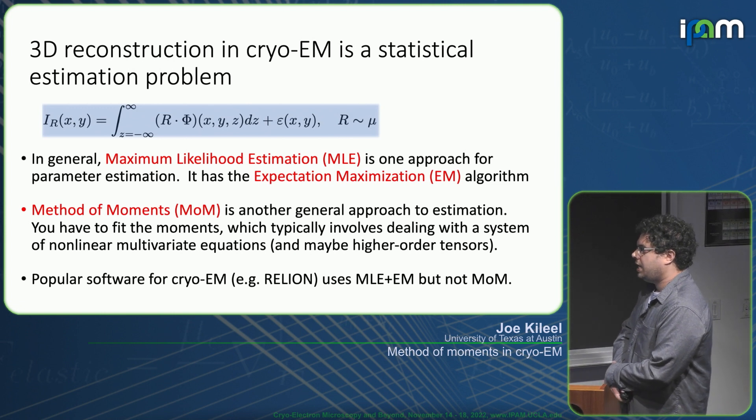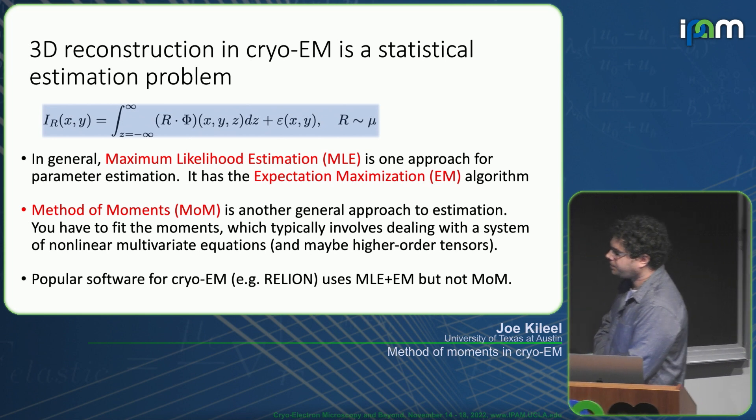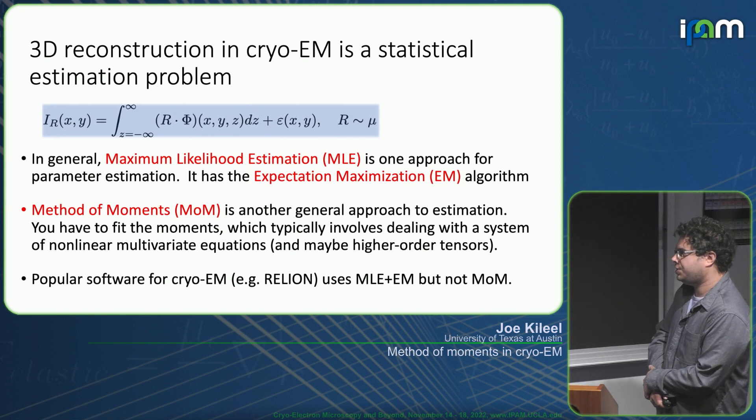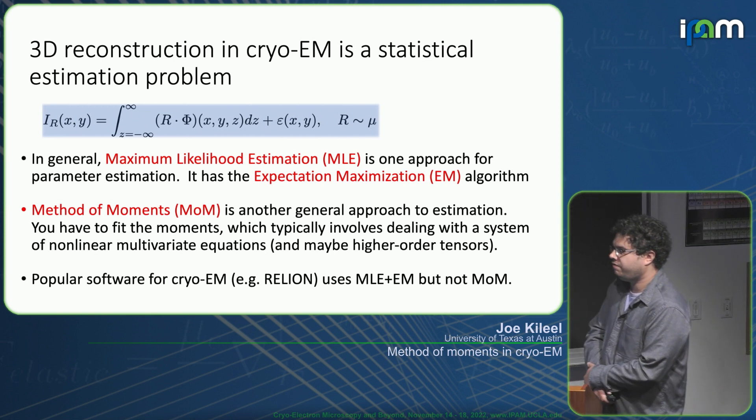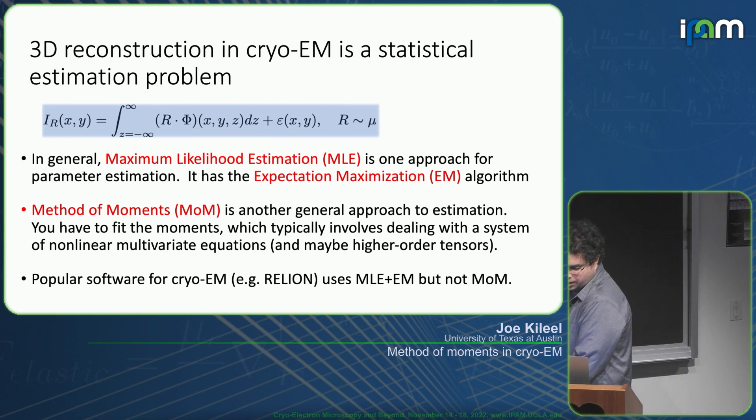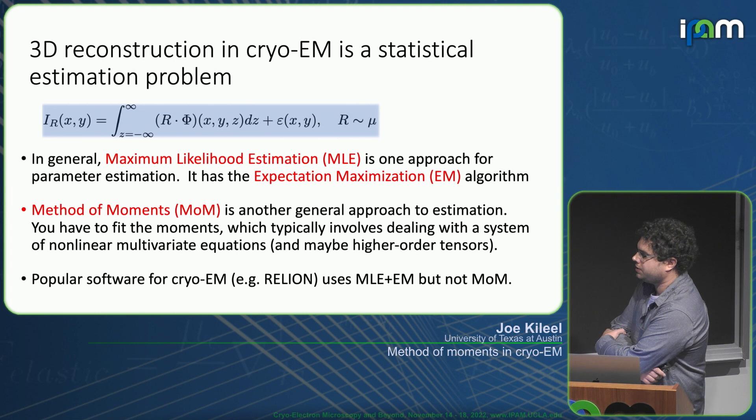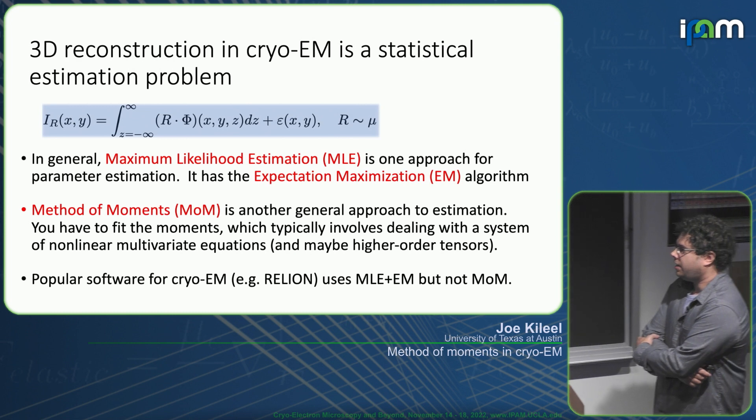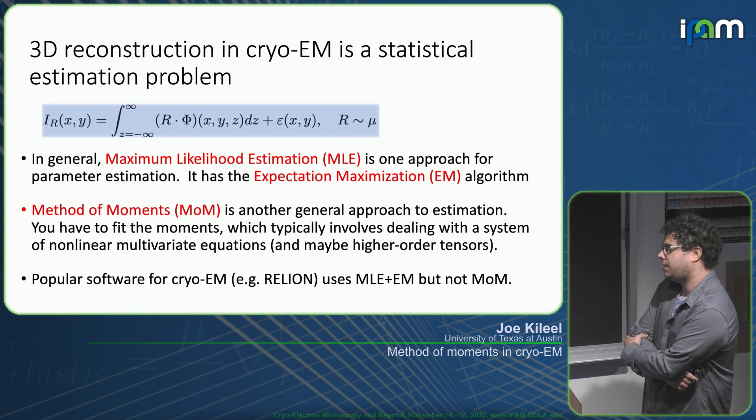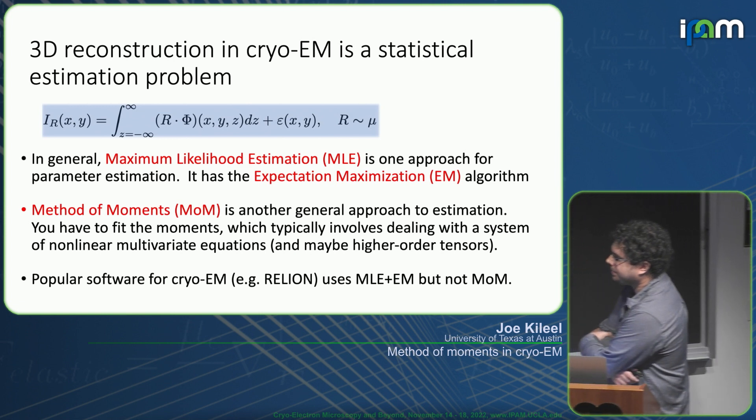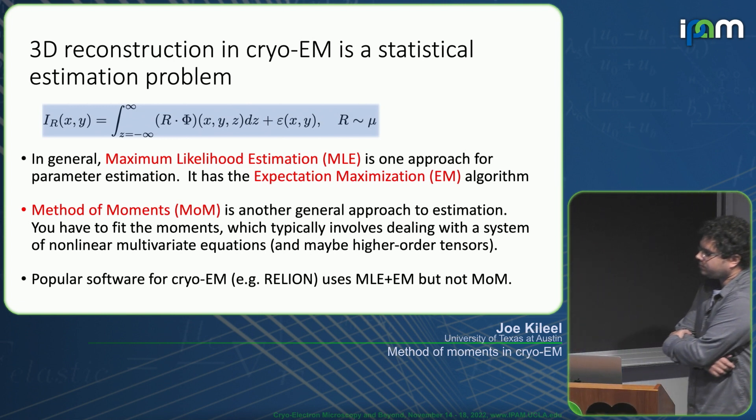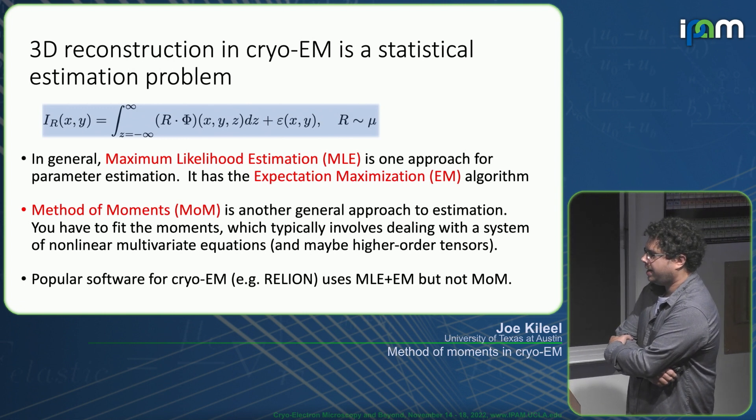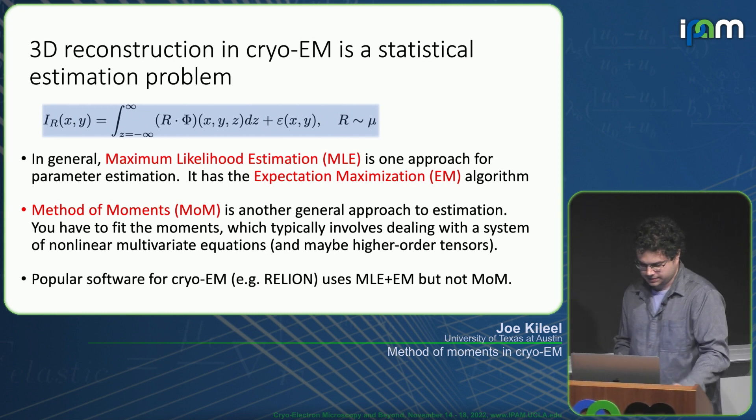One is maximum likelihood estimation with the expectation maximization algorithm, the EM algorithm. There's another approach to parameter estimation based on a different cost function, the method of moments. There's no analog to EM. You have to fit empirical moments to population moments, which typically involves dealing with a system of nonlinear multivariate equations. Higher order tensors come into play when you look at higher moments.